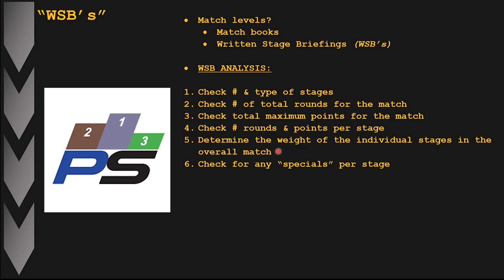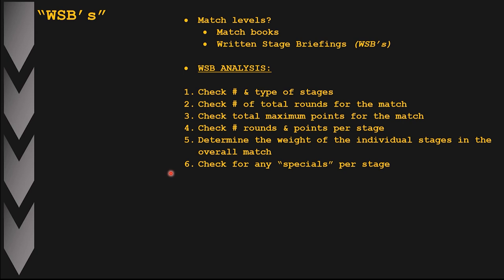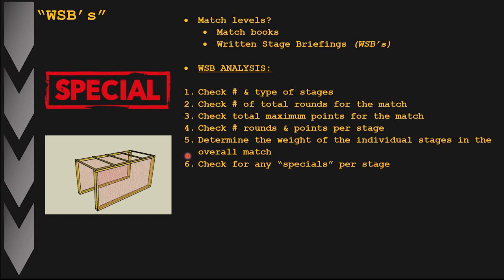That formula gives you your stage percentage. If you use apps like PractiScore or the Competitor app, you can actually find that information there — though it's often only available during or after the match. I want to know this in advance before I shoot. The next step is to analyze the written stage briefings visually, as well as reading the minimum required information and the procedure.